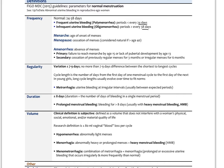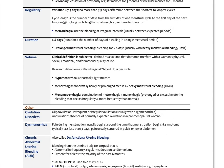Duration of a menstrual period should be less than or equal to eight days — that's the number of days of bleeding in a single menstrual period. Prolonged menstrual bleeding would be bleeding for more than eight days, and that's usually associated with heavy menstrual bleeding, or HMB. The volume of menses is subjective, defined as the volume that does not interfere with a woman's physical, social, emotional, and/or material quality of life. The research definition is less than 80 milliliters of vaginal blood loss per cycle.